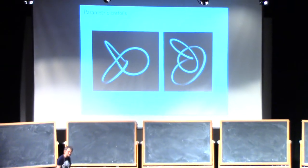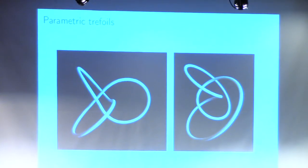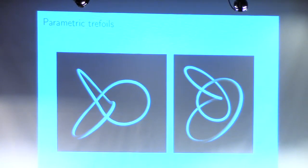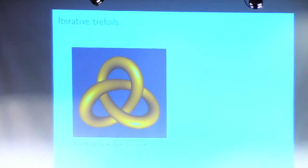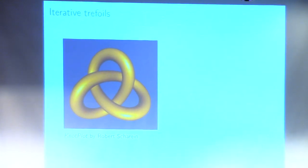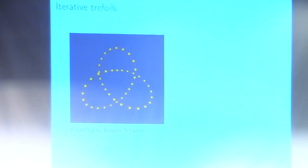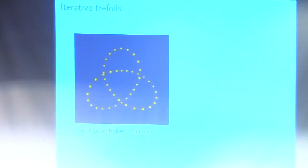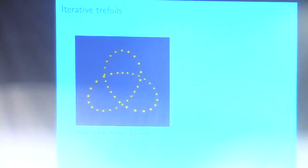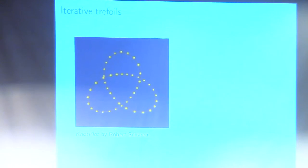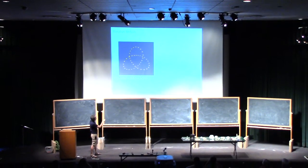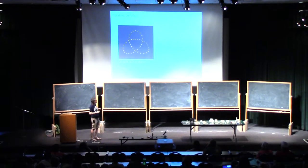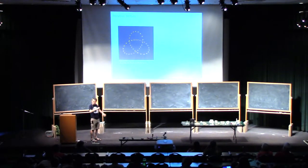Here are some parametrically generated trefoils — there are trigonometric things you can do to generate these looping curves. This trefoil is from a program called Knotplot by Robert Scharein. What's going on underneath is that there are a bunch of points connected by fixed-length sticks, and you imagine the points have electric charges on them so they're trying to get away from their neighbors. It starts with some shape and tries to relax to minimize energy, getting the electrons as far apart as possible.